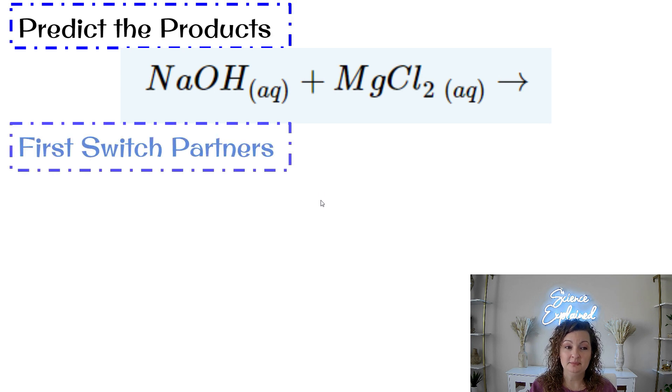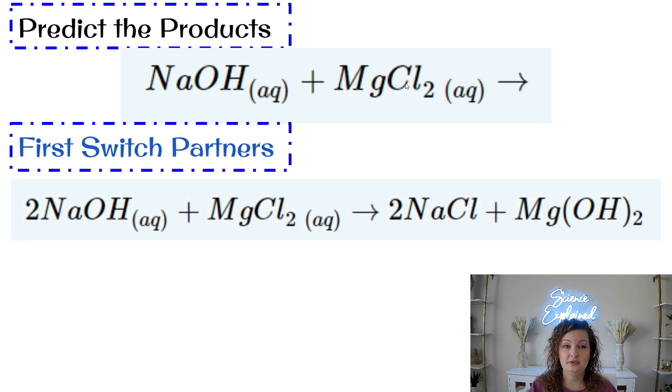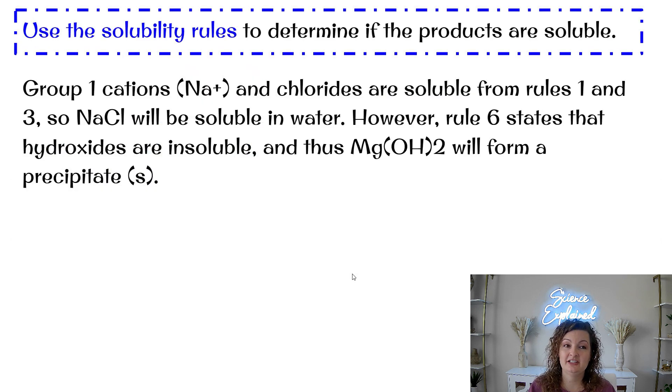Okay. So we are going to match up our partners. So Na goes with the Cl and OH will go with the Mg and we will form our products, but you're going to have to make sure that you balance your chemical equation before you move forward. All right. So you can see that now we have coefficients there because it needs to be balanced. And we're going to use the solubility rules to determine the products and if they're soluble or insoluble. So I just kind of did this for you and I'm giving you the synopsis here so we can move forward.